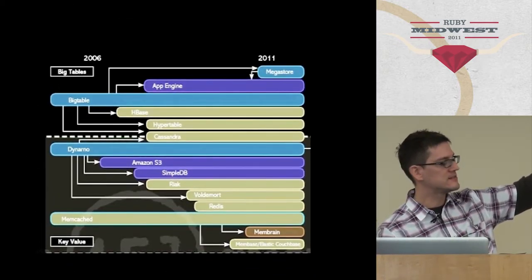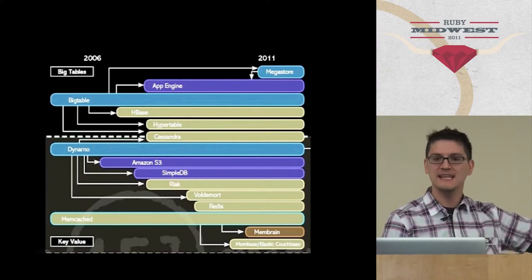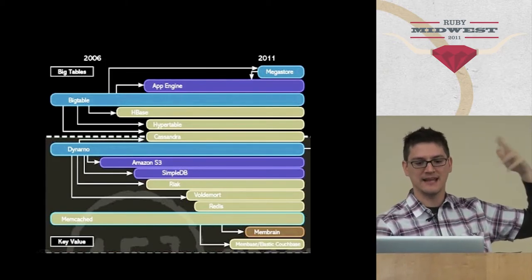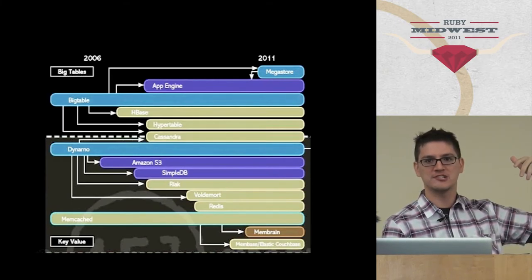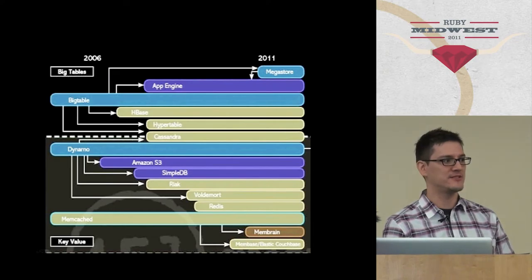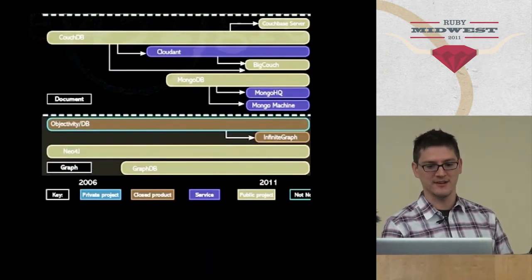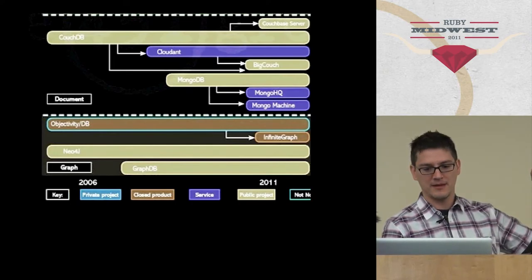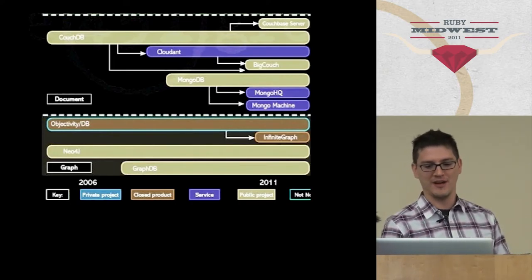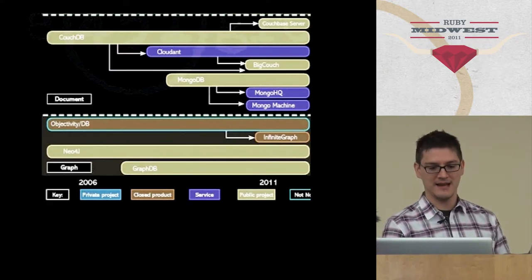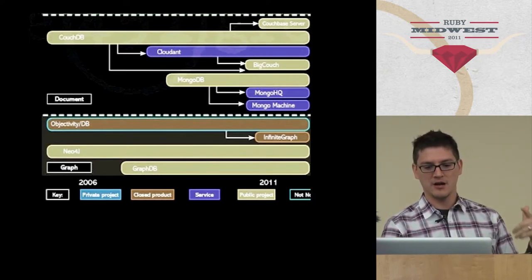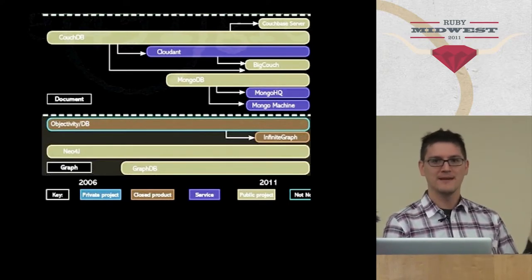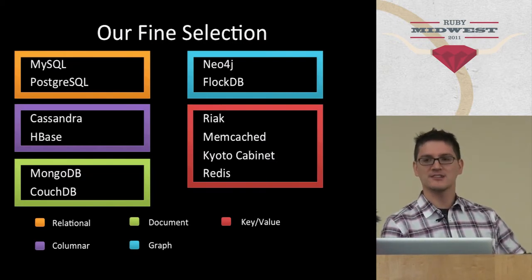You should notice at the top the little corner says big tables, down at the bottom it says key-value. These are grouped differently. Bigtable is the Google implementation that a lot of these databases like HBase and Hypertable and Cassandra have spawned off of. We like to call them columnar datastores because of the way they store data. Document datastores, all the big ones that people are probably aware of: CouchDB, Mongo, MongoHQ is a provider that spawned off of Mongo. Graph datastore: there's several out there. GraphDB and Neo4j, in my opinion, are pretty much the only ones worth looking at.